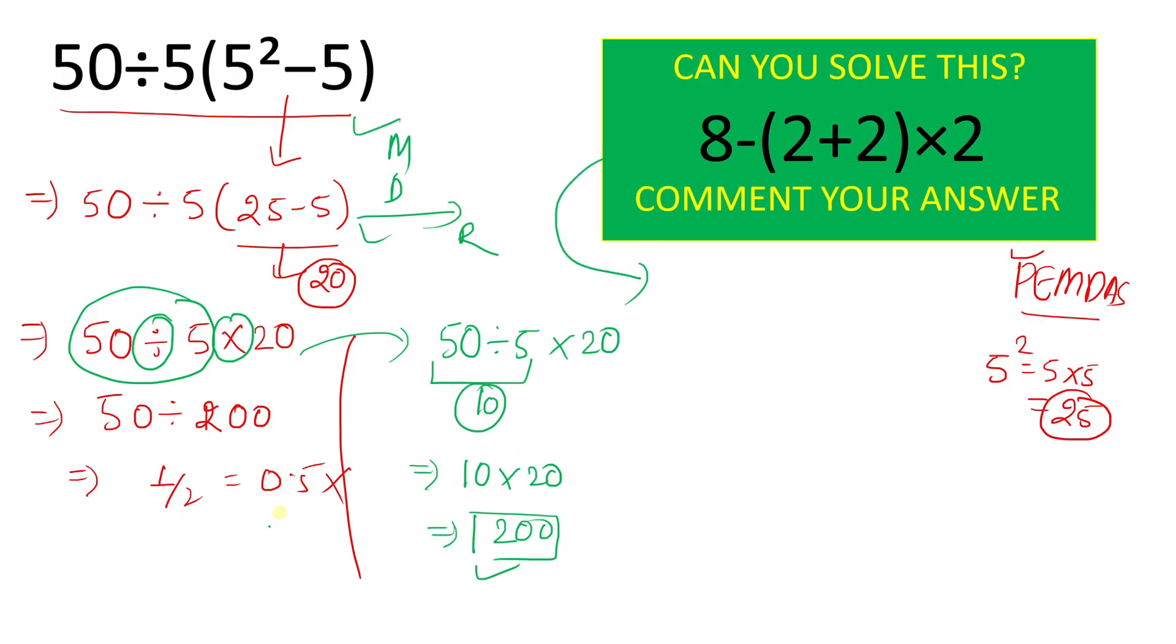And moving to the next question, we have 8 minus, parenthesis 2 plus 2, times 2. So always solve for parenthesis. 2 plus 2 will give result 4. We will rewrite 8 minus 4 times 2.